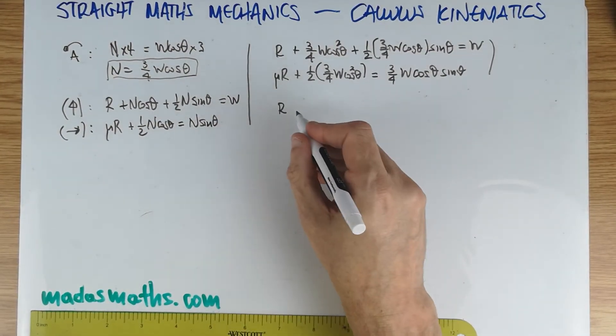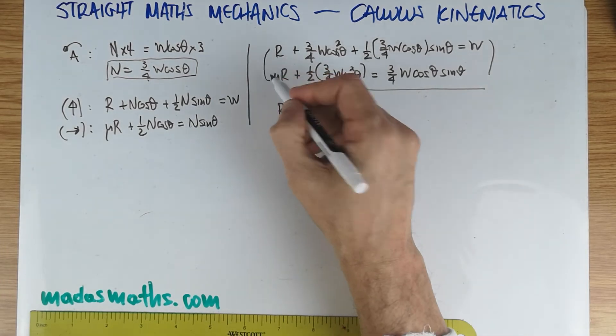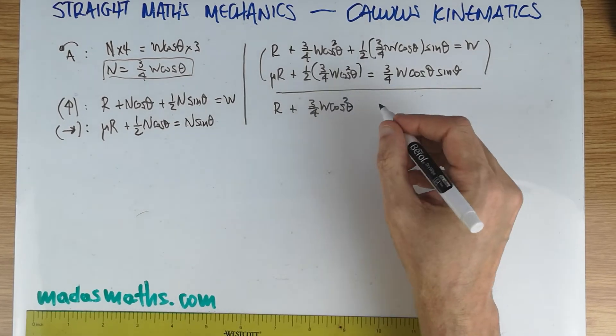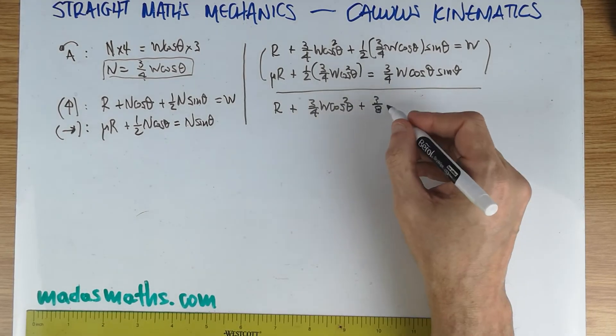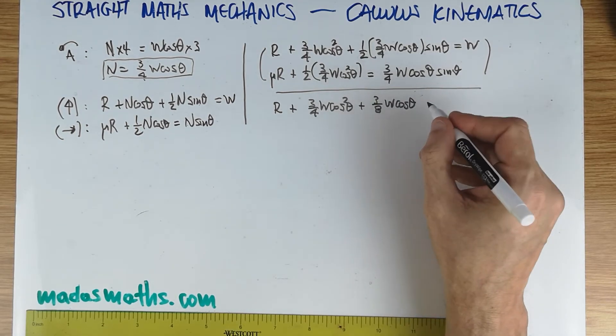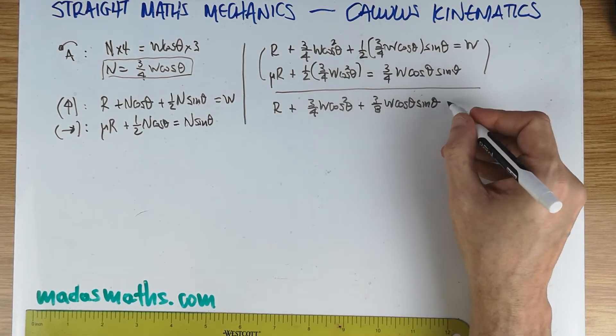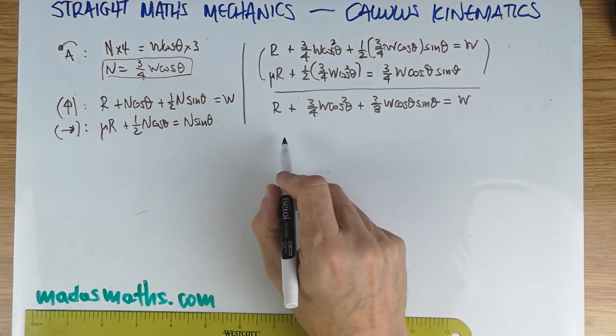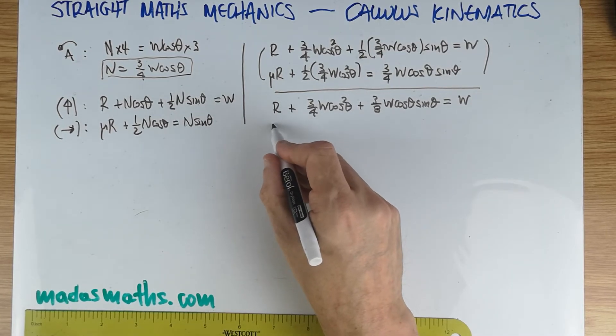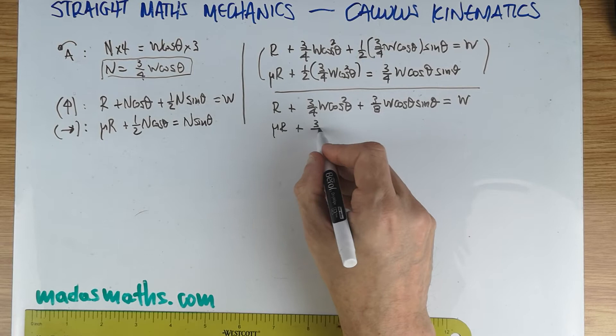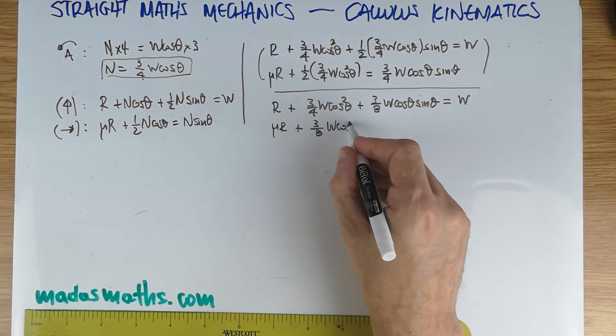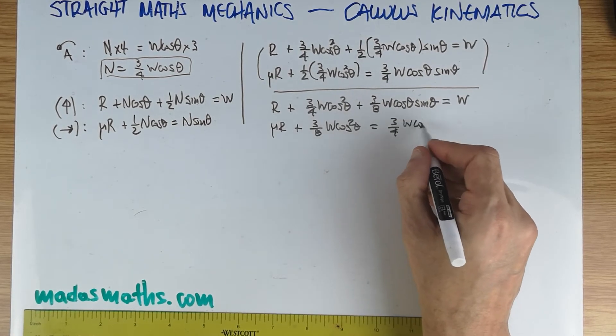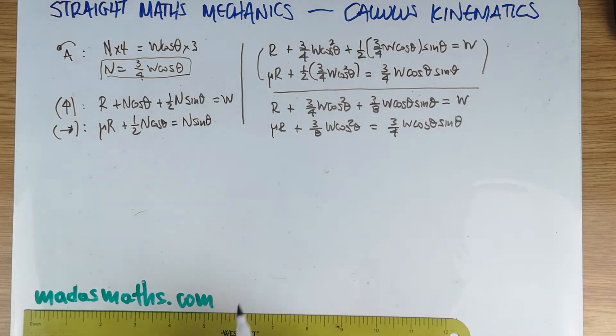Pausing a little bit, tidy this a little bit further. We've got R, three-quarters W cos squared θ, plus three-eighths W cos θ sin θ, is equal to W. And we have μR plus three-eighths W cos squared θ is equal to three-quarters W cos θ sin θ.